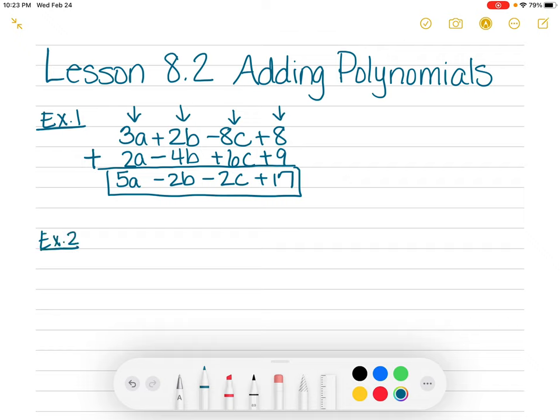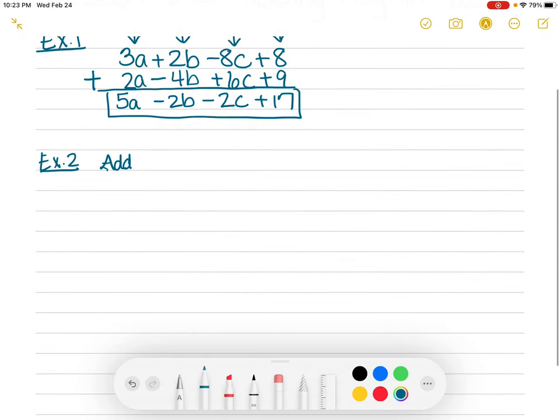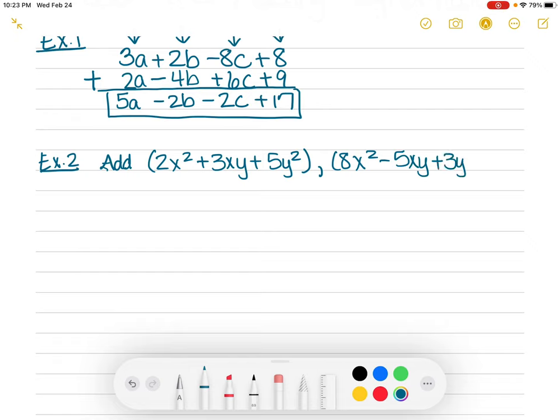Example two, I'm going to show you the same idea, but it's going to look a little bit different. So sometimes in your book, although there's not too many like this today, it will say add and then it will give you things like maybe in parentheses. It might put some things separated by commas. But the first one is 2x squared plus 3xy plus 5y squared. And then they put a comma because they're saying add that to this next one, which is 8x squared minus 5xy plus 3y.